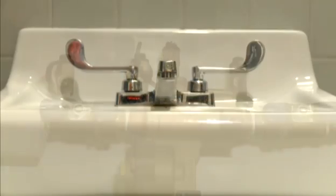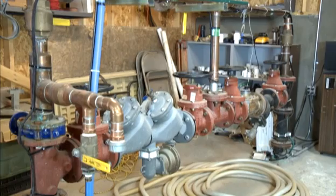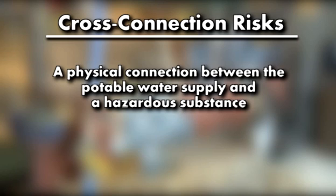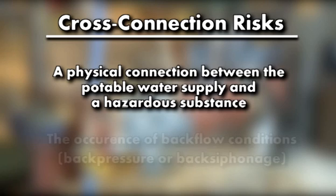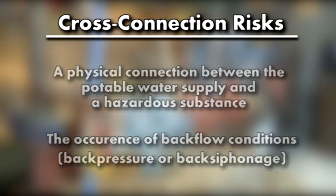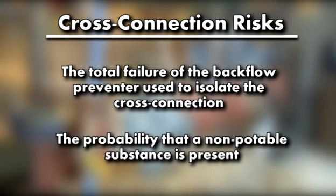Every cross-connection poses a different risk based on the probability of the occurrence of the following: a physical connection between the potable water supply and a hazardous substance; the occurrence of backflow conditions, back pressure, or back siphonage; the total failure of the backflow preventer used to isolate the cross-connection; and the probability that a non-potable substance is present.